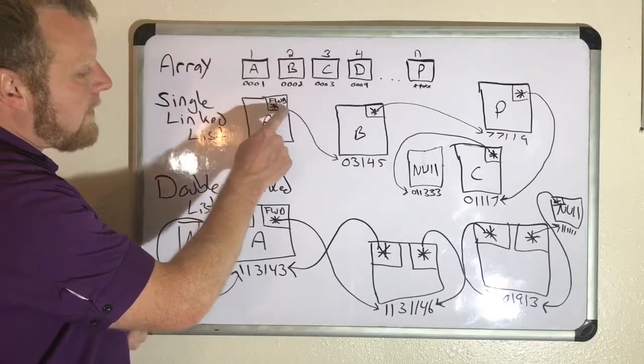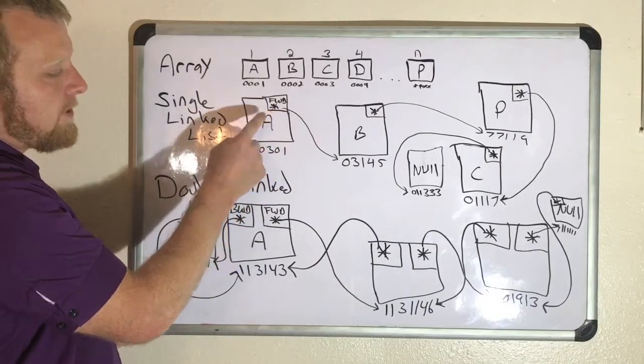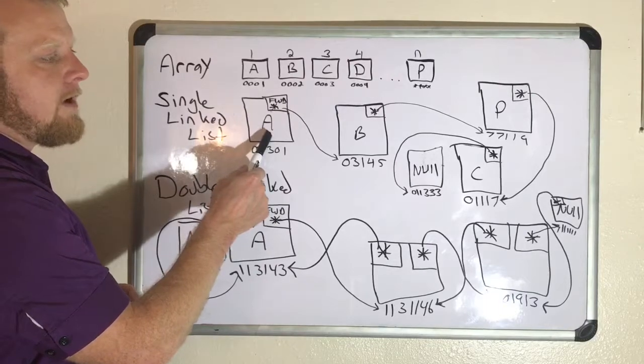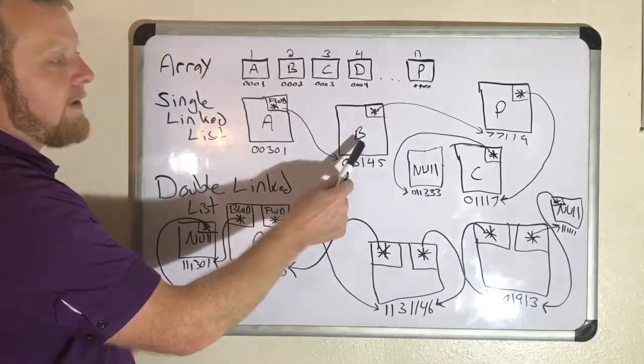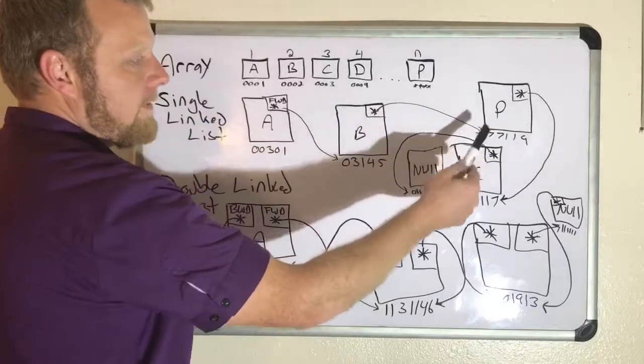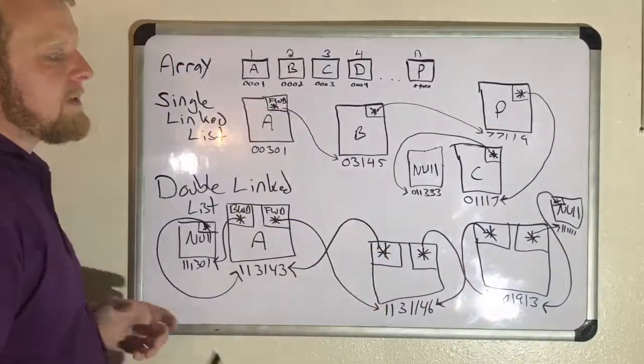So A will go forward. It'll take its forward pointer, which is an address. It says, okay, it's not A I was looking for, I was looking for something else. Traverse it. Oh, there's B. It's not B. Where can I go next? Oh, let's go to P. It's not P. Let's go to C.